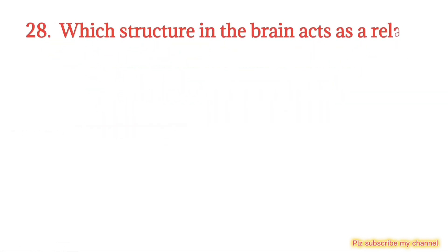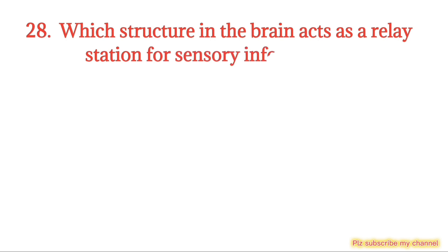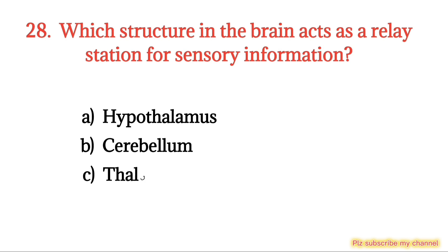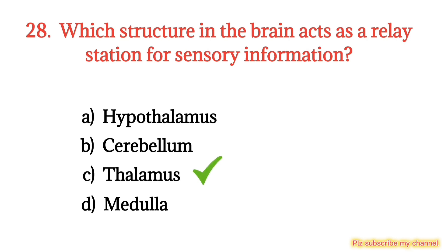MCQ number 28. Which structure in the brain acts as a relay station for sensory information? Option A: Hypothalamus. Option B: Cerebellum. Option C: Thalamus. Option D: Medulla. The right option is Option C.